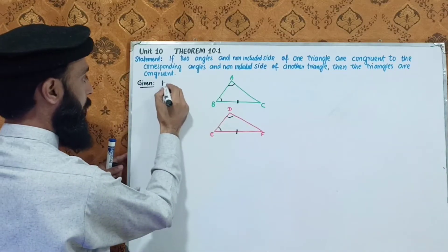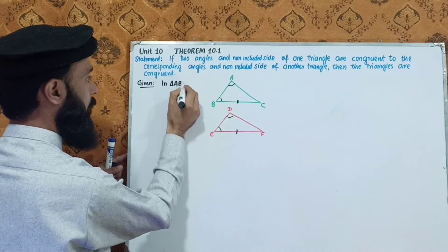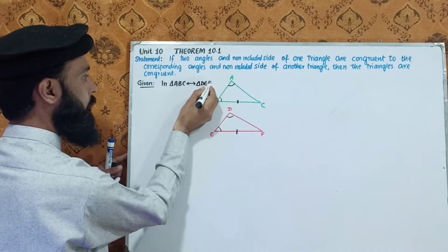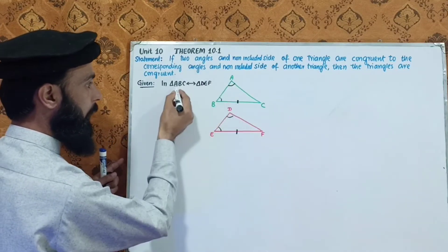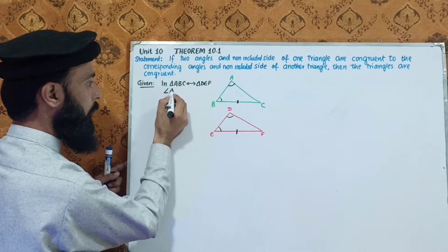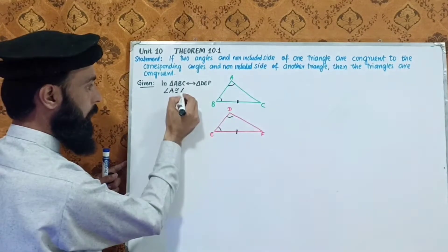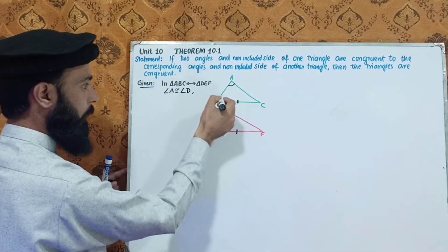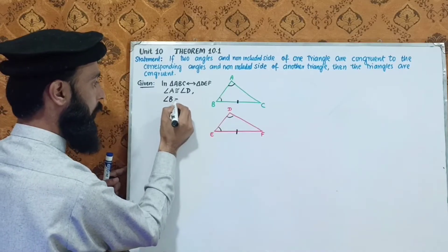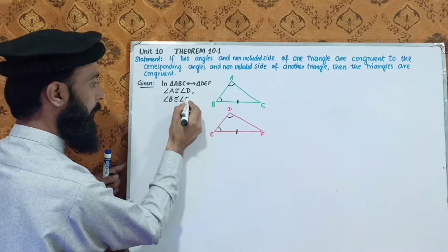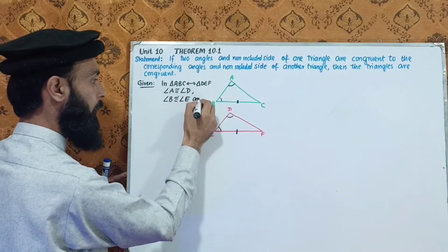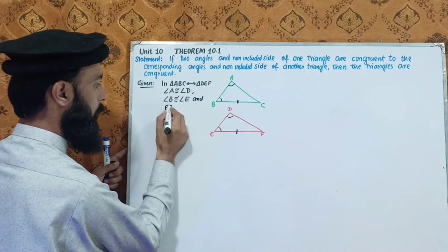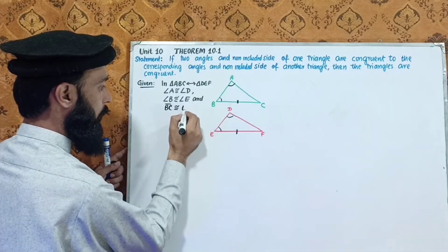Triangle ABC corresponds to triangle DEF. Angle A is congruent to angle D, angle B is congruent to angle E, and the non-included side BC is congruent to EF. This is the given information for the proof.